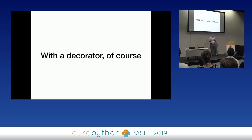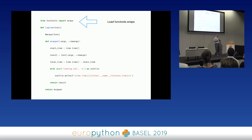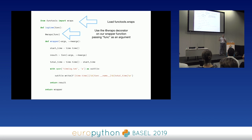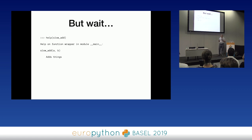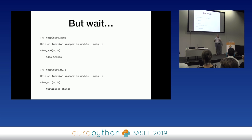What that does is: if we do help(slow_add) now, we get our docstring and our original function signature. Same thing for mul. It turns out that functools.wraps helps with integration with other systems, allowing our decorated function to pretend it wasn't decorated after all.